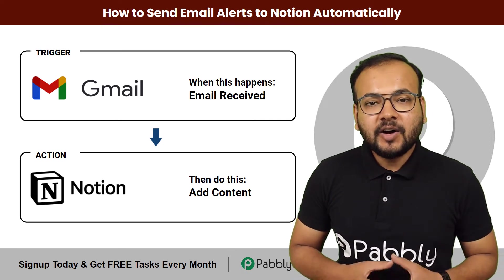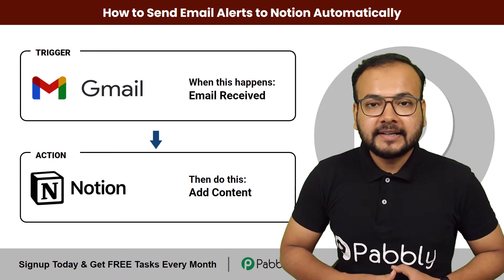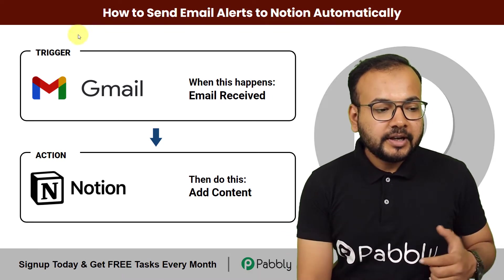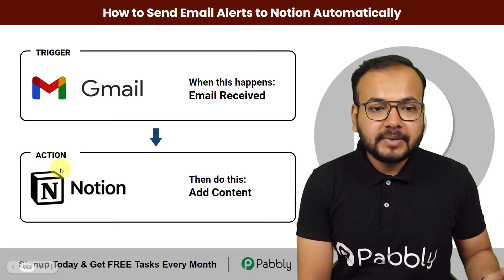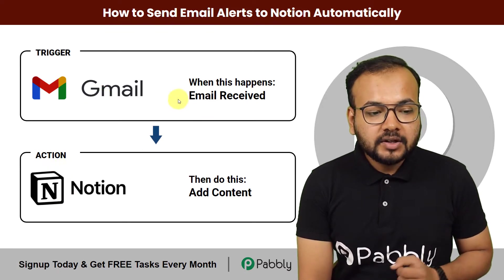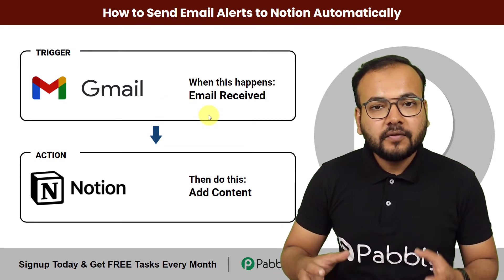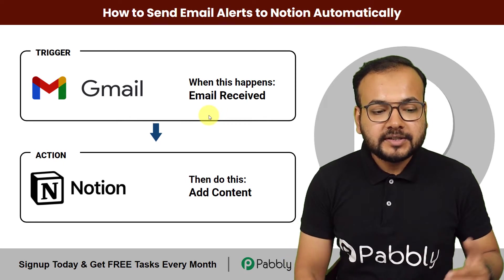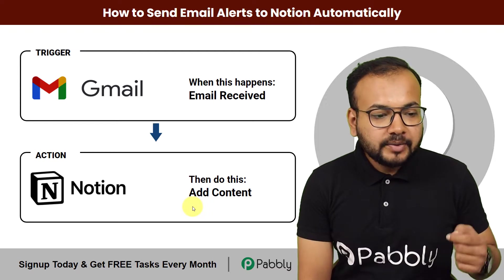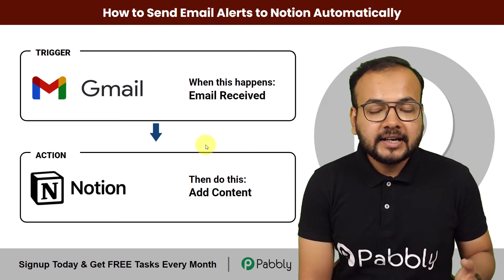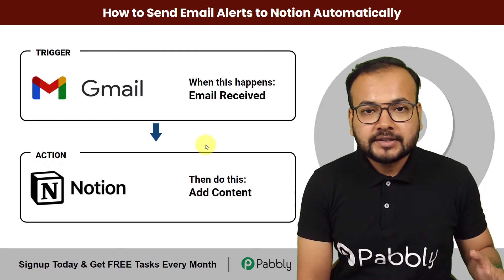In this video you will learn how you can send email alerts to your Notion automatically. We are going to connect Gmail as the trigger application and Notion as the action application, such that whenever you receive specific emails in your Gmail inbox, the data of those emails will be delivered to your Notion database automatically. We are using Pabbly Connect, an automation tool, and you can set up this automation without any coding skills.